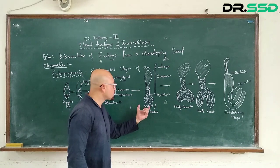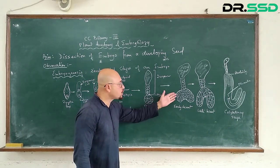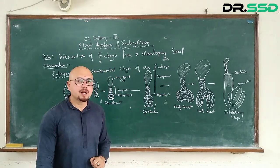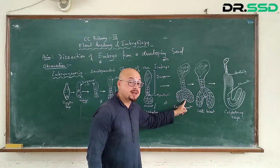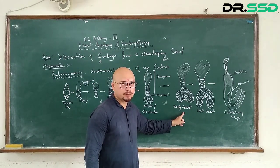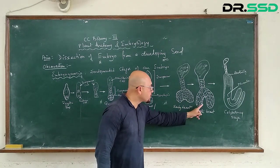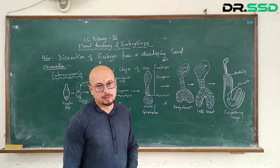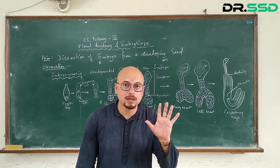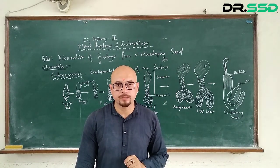Eventually this globular embryo is going to become little bit notched. It is called as an early heart-shaped embryo. And this notch is going to become late heart-shaped embryo.